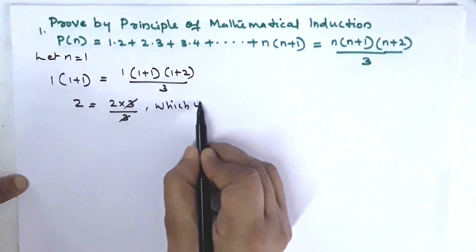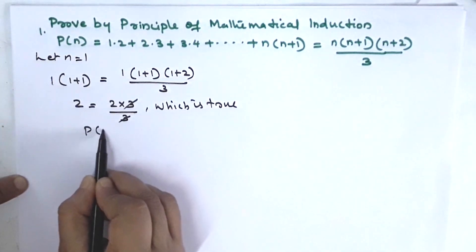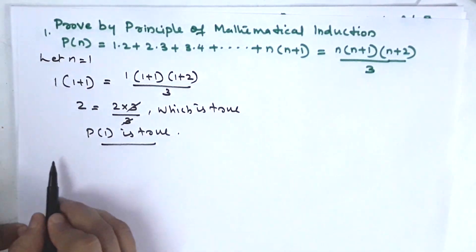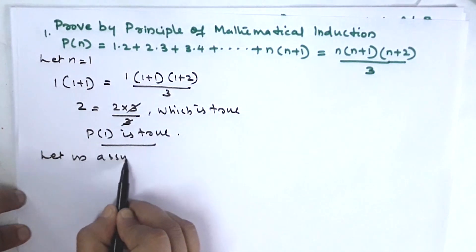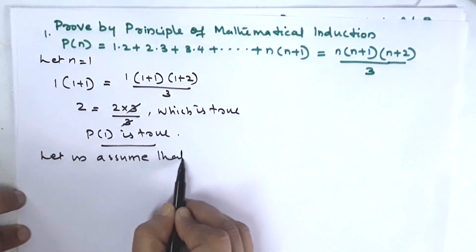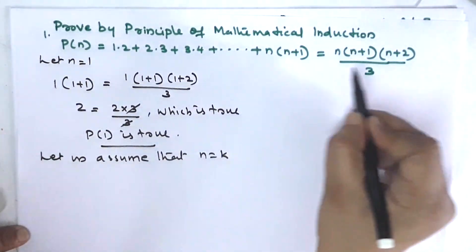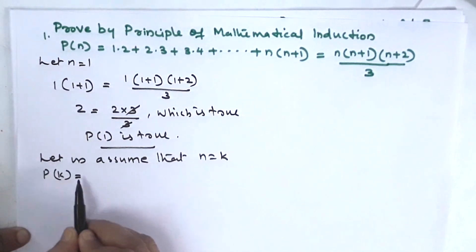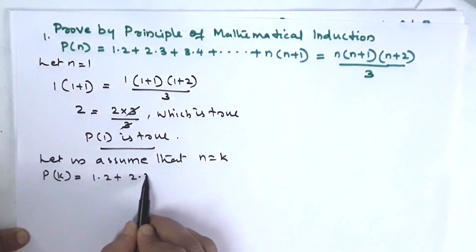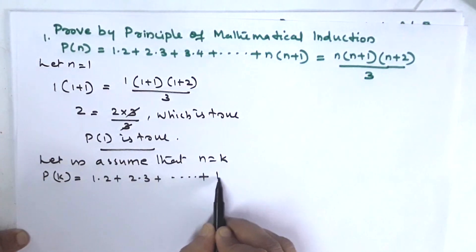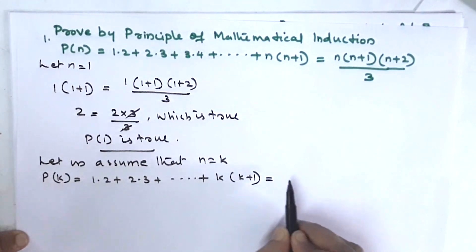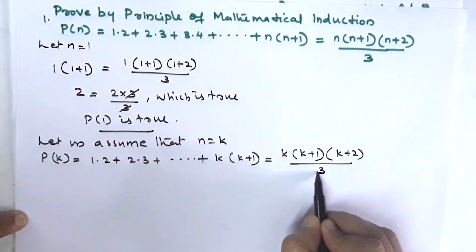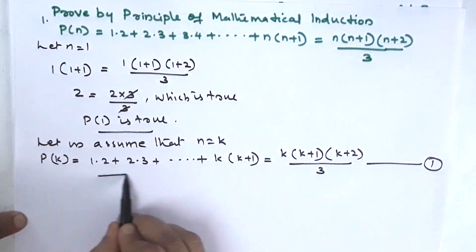That is equal to 2, which is true. P(1) is true. Now, let us assume that n equal to k. Substituting k in the statement: P(k) = 1·2 + 2·3 + ... + k(k+1) = k(k+1)(k+2) / 3. This is equation number 1 — our leading step.